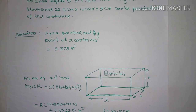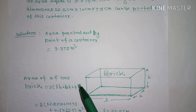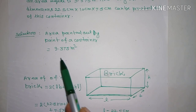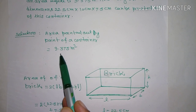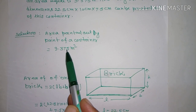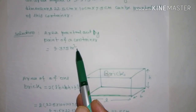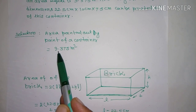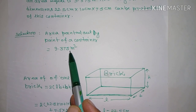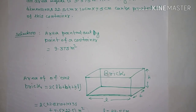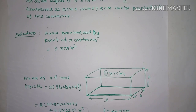Area painted out by the paint is 9.375 meters square. Now for the brick, we need to find its total surface area.